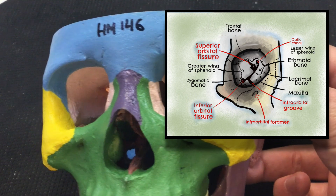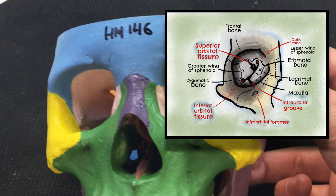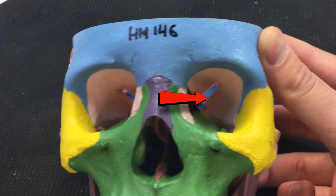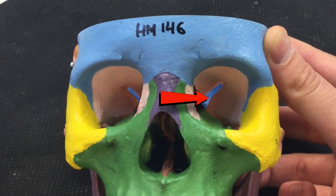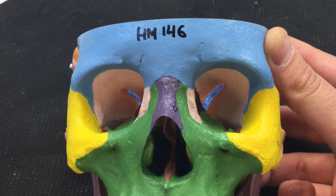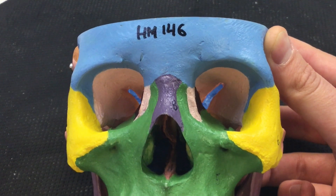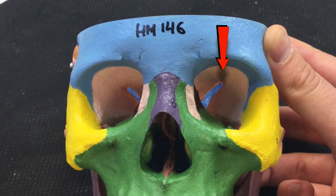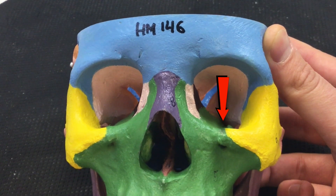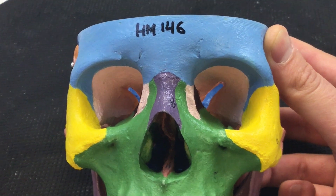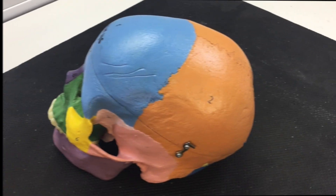Let's take a look at a couple of these on the actual skull. We saw the optic canal earlier — now we get a better view of that big hole, which is the superior orbital fissure. If I just tilt the skull, you should be able to see on the floor of the orbit — that's the inferior orbital fissure. So those are the main foramina of the orbit.